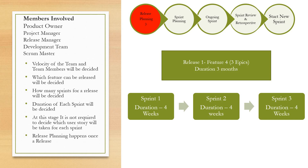The next stage is release planning. Members involved are the product owner, the project manager, the release manager, the development team, and the scrum master. The main objectives of release planning are: the velocity or capacity of the team and team members will be decided; which features can be released will be decided; how many sprints per release will be decided; and the duration of each sprint will also be decided.